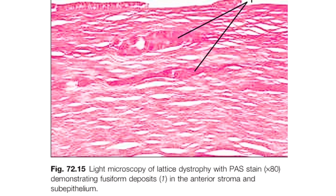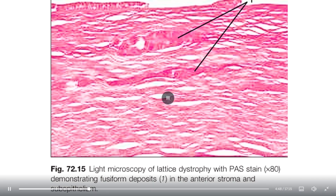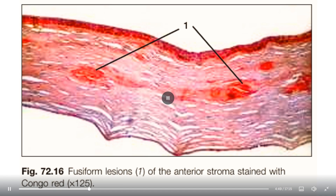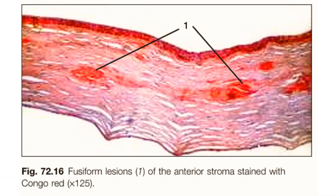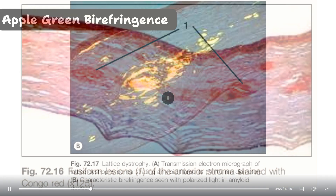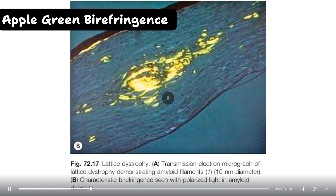This picture shows periodic acid-Schiff stained fusiform amyloid deposits in the anterior stroma. When the same lesions are stained with Congo red, they appear reddish, and when viewed under polarized light, they give the characteristic apple green birefringence.